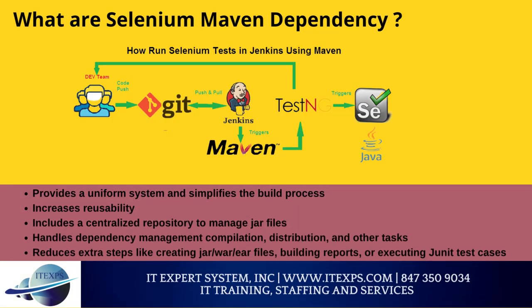What are Selenium Maven Dependencies? A Selenium project for test automation requires all dependencies associated with it. These can be downloaded and upgraded manually, but as the project gets bigger, it can be challenging to manage them. This is why you need build automation tools. Maven can easily handle the entire lifecycle of a project, including code generation, compilation, testing, validation, packaging, and more. Key reasons to use Maven in Selenium include: providing a uniform build system, increasing reusability, including a centralized repository to manage JAR files, handling dependency management and distribution, and reducing extra steps like creating JAR, WAR, IR files, building reports, or executing JUnit test cases.